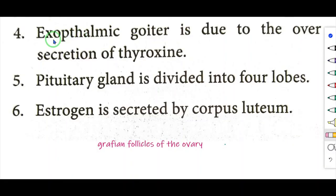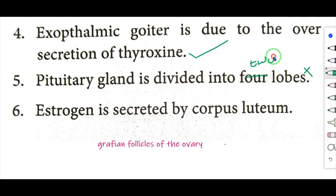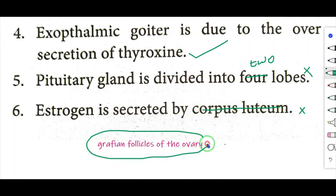True or False. Question 4: Exophthalmic goiter is due to the oversecretion of thyroxine — correct. Question 5: Pituitary gland is divided into 4 lobes — wrong; correct answer is 2 lobes. Question 6: Estrogen is secreted by corpus luteum — wrong; correct answer is Graafian follicles of the ovary.